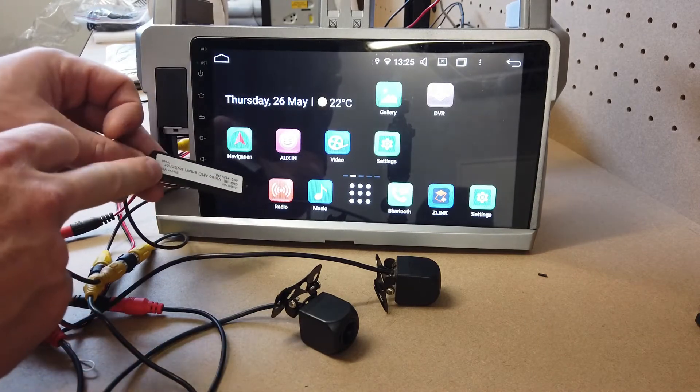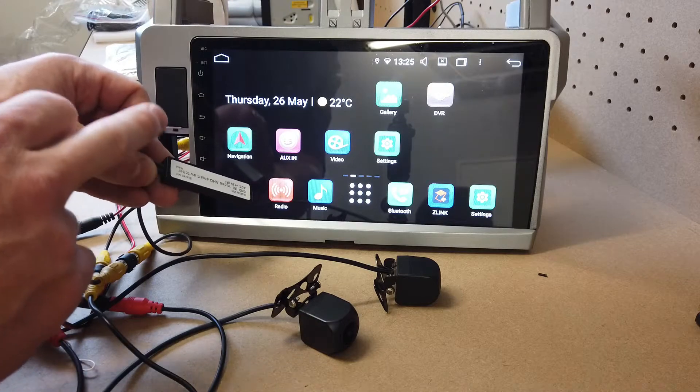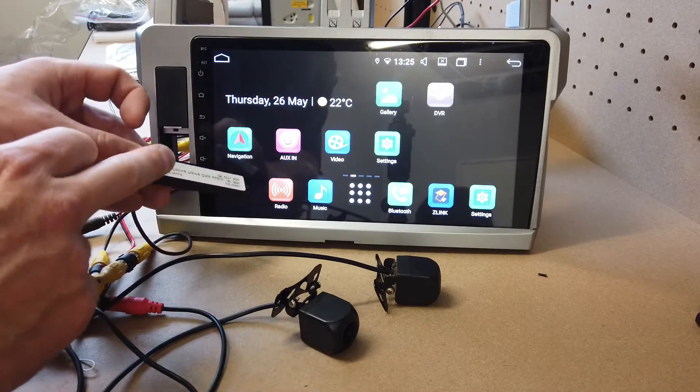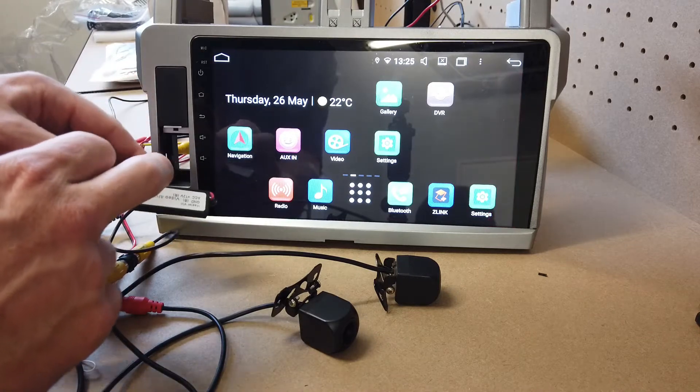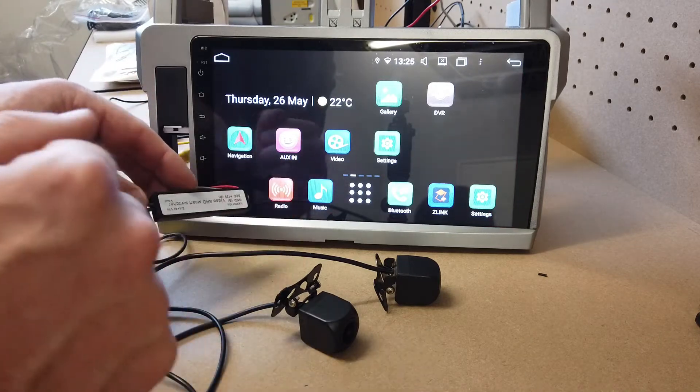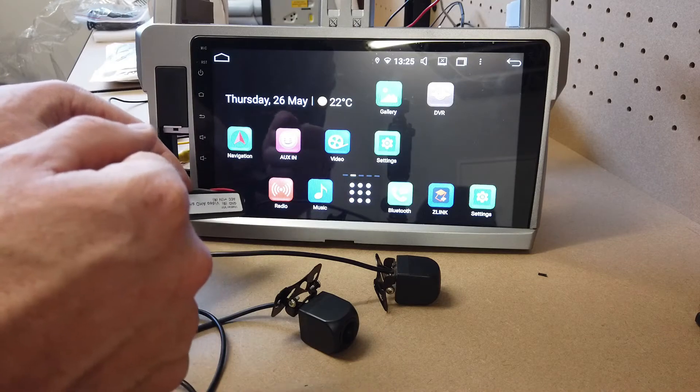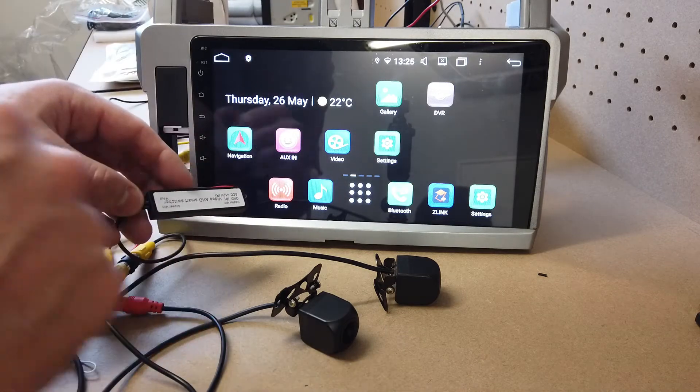What this allows you to do is plug in two cameras, and the master one will always take over if it's connected. This is handy if you have a caravan - when you plug the caravan in and go into reverse, it shows the caravan camera.